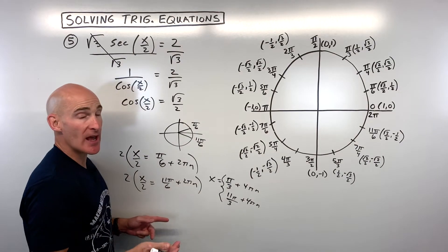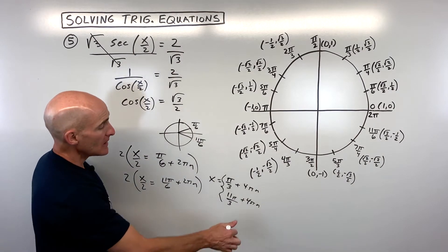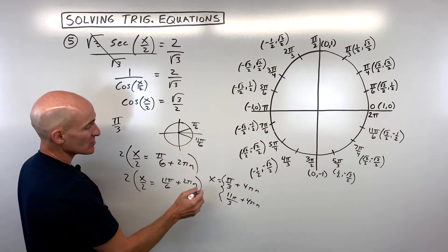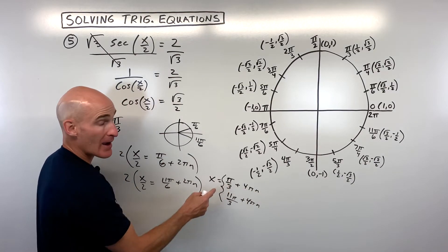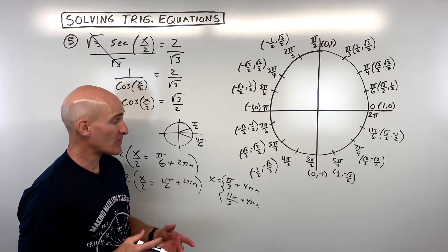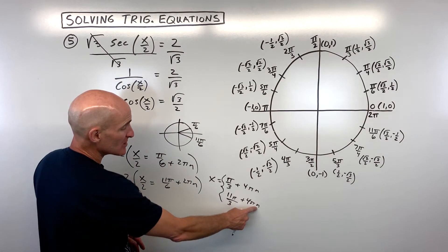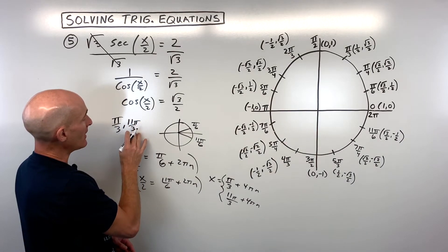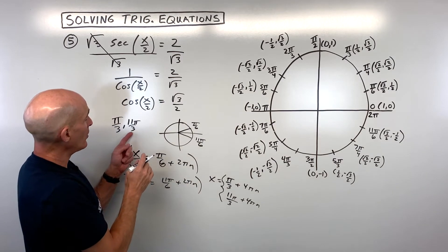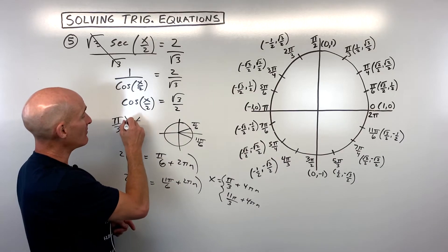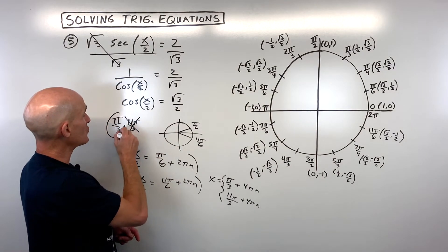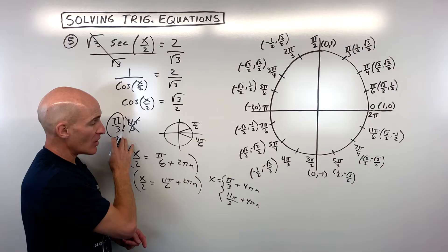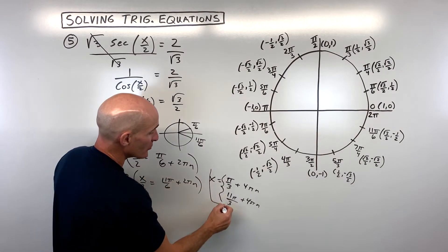For solutions from zero to two pi, substituting n equals zero gives pi over three and eleven pi over three. Since eleven pi over three is about three and two-thirds pi, it's greater than two pi and not valid. Substituting n equals one for pi over three gives four pi plus pi over three, also greater than two pi. So from zero to two pi, the only answer is x equals pi over three.